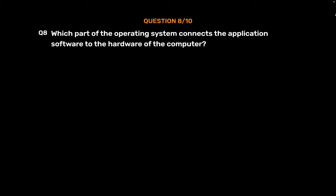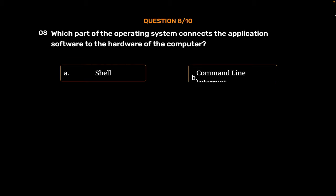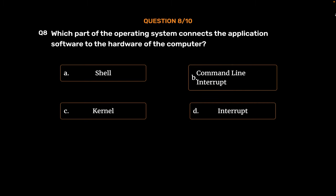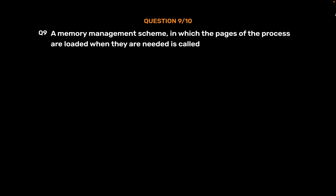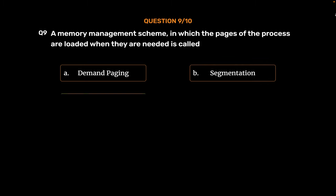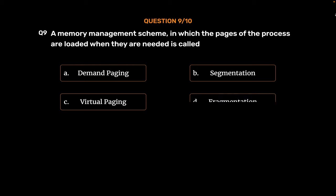Question No. 9. A memory management scheme in which the pages of the process are loaded when they are needed is called: Option A: Demand Paging. Option B: Segmentation. Option C: Virtual Paging. Option D: Fragmentation. The correct answer is Option A: Demand Paging.